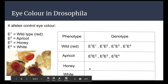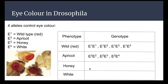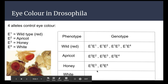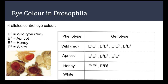Moving down to honey-colored eyes: they have to have at least one E3, but nothing above that — no E1s, no E2s. So it can be E3/E3 or E3/E4. The E3/E4 fly is a carrier of white. And if the fly has white eyes, they only have one genotype option: E4/E4. That's the only eye color with just one possible genotype.